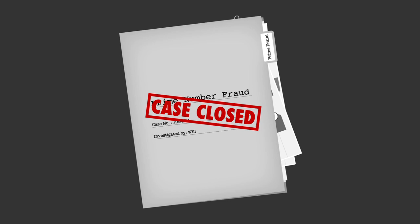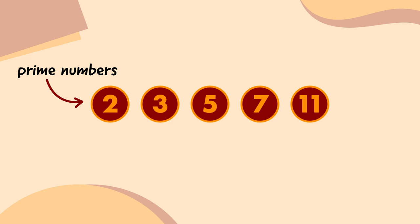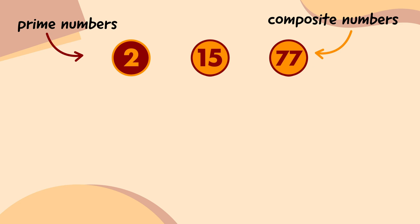So let's quickly remind ourselves: prime numbers are the building blocks of maths and can be multiplied together to create composite numbers. Composite numbers have several factors — whole numbers that can divide exactly into them. But a prime number only has two factors: one and itself.